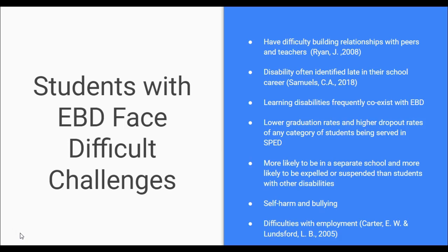With students with EBD, learning disabilities frequently coexist. Actually, more than half of students with EBD may meet the criteria for one or more other disabilities. For example, a student with a learning disability may also be dealing with severe anxiety or obsessive compulsive disorder, which would fall under the umbrella of emotional disturbance — the IDEA categorization requirement for the label of emotional behavior disorder.